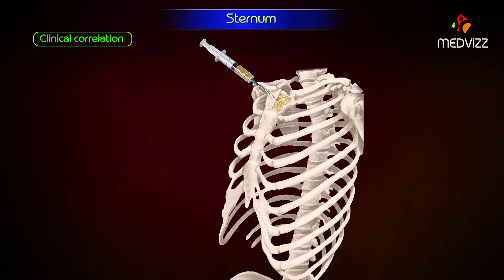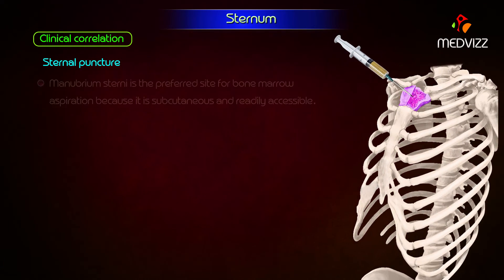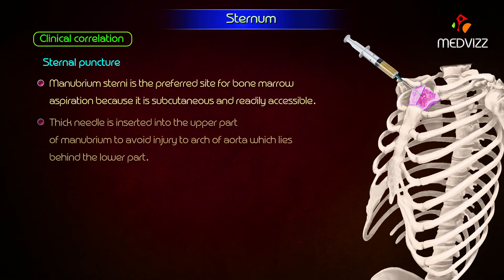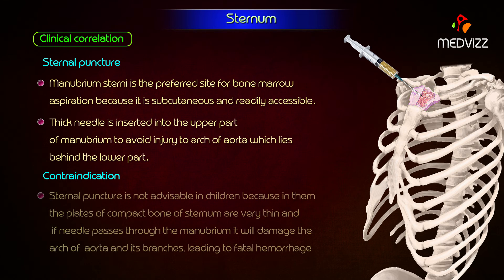Clinical correlation. Sternal puncture. The manubrium sterni is the preferred site for bone marrow aspiration because it is subcutaneous and readily accessible. The bone marrow sample is required for hematological examination. A thick needle is inserted into the upper part of the manubrium to avoid injury to the arch of the aorta, which lies behind its lower part. Sternal puncture is not advisable in children because the plates of compact bone are very thin, and if the needle passes through the manubrium it will damage the arch of the aorta and its branches, leading to fatal hemorrhage.